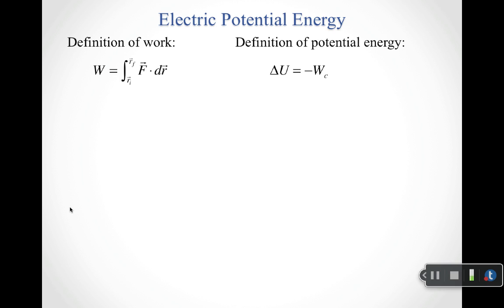To start talking about electrical potential energy, let's go back to our two fundamental definitions used to build up the idea of potential energy. The first is the definition of work. We know that work is defined to be the integral from some initial position to some final position of F dot dr — taking the dot product of the force vector with the displacement and adding them up over tiny differential steps.